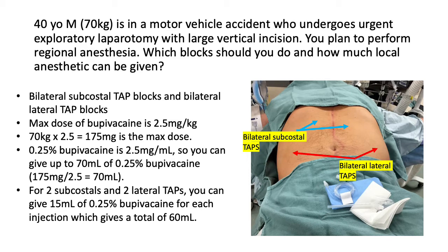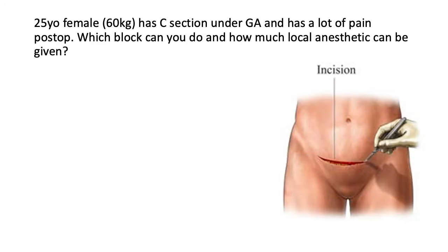Our next case is a 25-year-old female who is 60 kilograms. She has an urgent C-section under general anesthesia and has a lot of pain postoperatively. Since she has a lower abdominal incision — a Pfannenstiel incision — you can do bilateral TAP blocks that cover the T10 through T12 to L1 dermatomes.